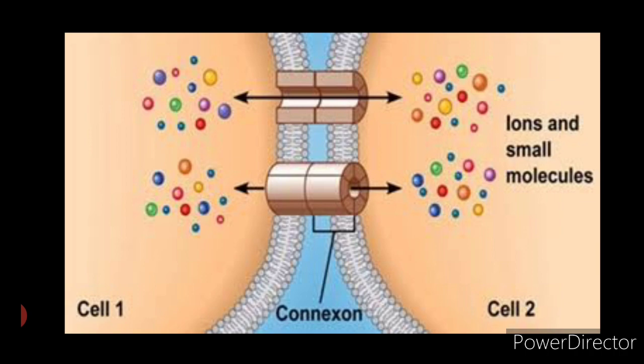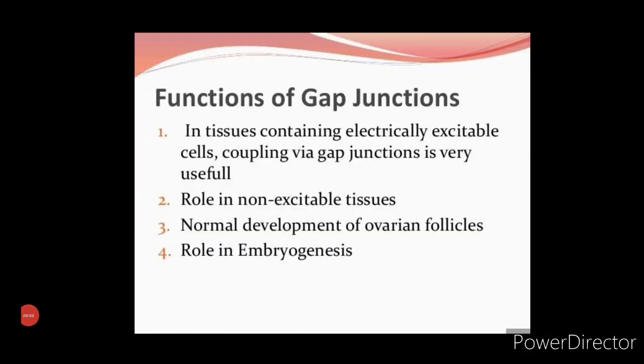Gap junctions have four important functions. First, gap junctions provide direct intercellular communication by allowing the passage of molecules up to molecular weight of 1300 to 1900 daltons.